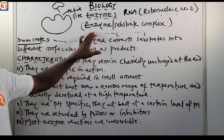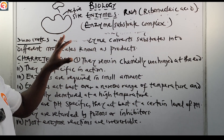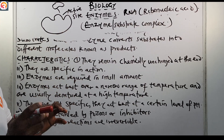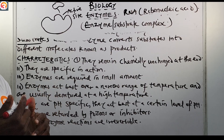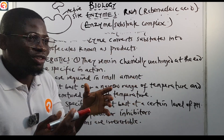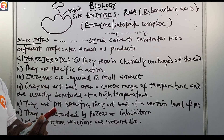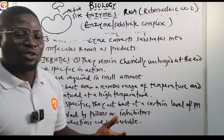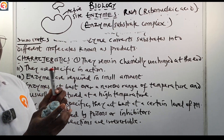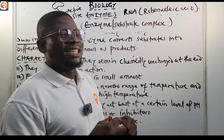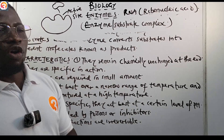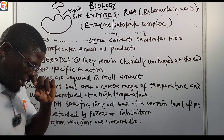In the third step, the enzyme breaks down the substrate into simple molecules and forms a product. Then the enzyme releases the newly formed product and waits for another substrate to act on. This is a continuous process. It is very important to know that enzymes are specific in action — I'll explain more when we talk about the characteristics of enzymes.